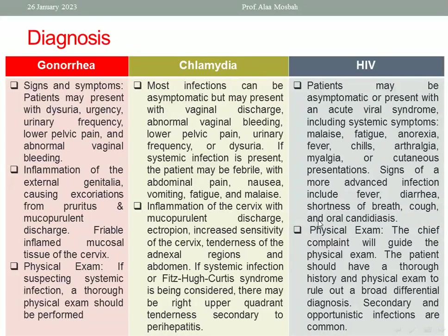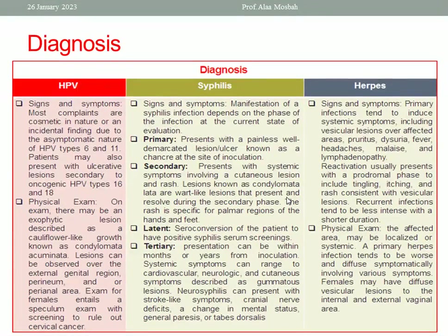What about HIV? The patient may be asymptomatic or present as an acute viral syndrome with flu-like symptoms: malaise, fatigue, anorexia, fever, chills, arthralgia, myalgia, or cutaneous presentations. Signs of more advanced infection include fever, diarrhea, shortness of breath, cough, and oral candidiasis. Remember that secondary and opportunistic infections are common in HIV, and the patient can also be complicated by pneumonia.